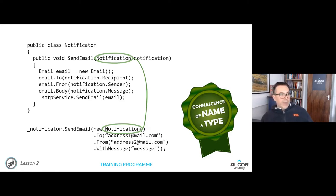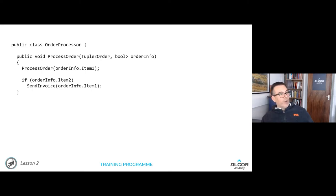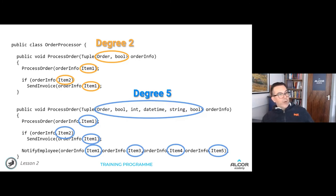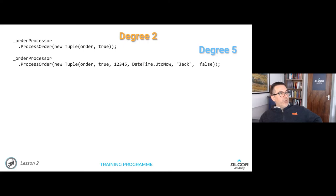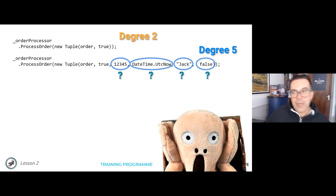To fix connaissance of position, we can create types for Recipient, Sender, and Message — now the type identifies the parameter, not the position. An alternative is a Notification class built fluently like a builder pattern. Both approaches use connaissance of name and type to fix connaissance of position. It's especially bad when it has a high degree — for example, a tuple with five items becomes very unreadable and loses all meaning.